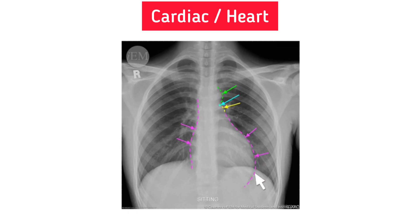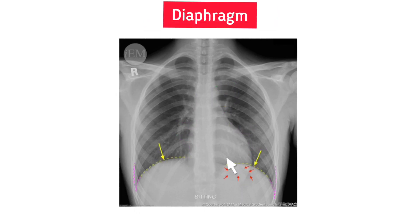Next, the heart. Heart borders on the AP chest x-ray are shown with pink dashed lines, yellow dashed lines for the aortic arch, and circles/arrows for the aortopulmonary window. The silhouette of the heart should be identified and the heart border should be clear. As a general rule, the heart base should not be wider than half the total width of the diaphragm. If it exceeds this, it refers to cardiomegaly or pericardial effusion.